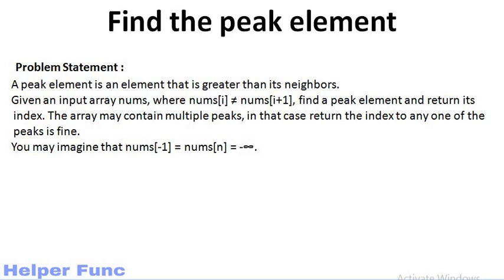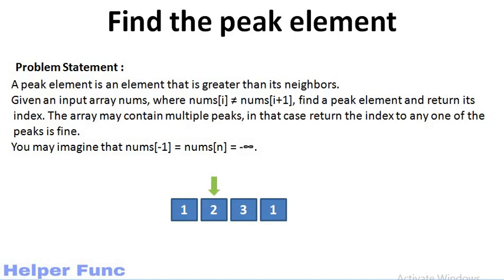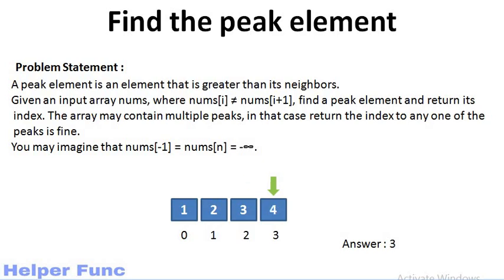Now let's look at an example. 1 cannot be the peak element as 2 is greater than 1. 2 cannot be the peak element as 3 is greater than 2. Now 3 is a peak element because it is greater than both 2 and 1, and 1 is not a peak element because it is lesser than 3. Thus our answer to this example would be index 2, that is the index of element 3. For the second example, our peak element is 4 as it is greater than 3, and because it is the last element, we just need to compare it with the previous one.